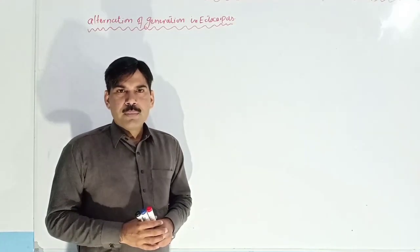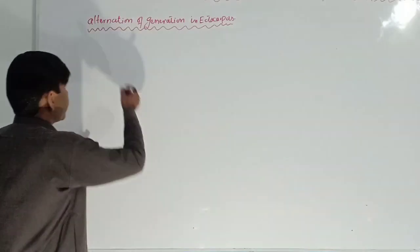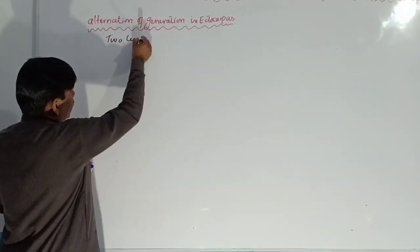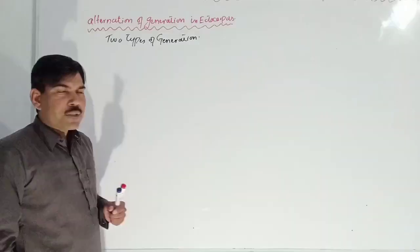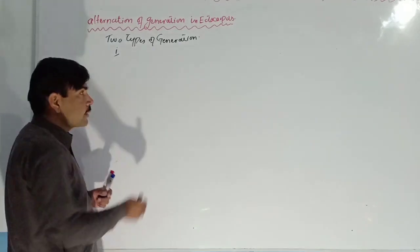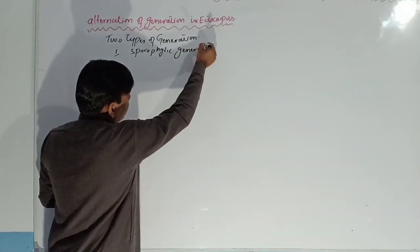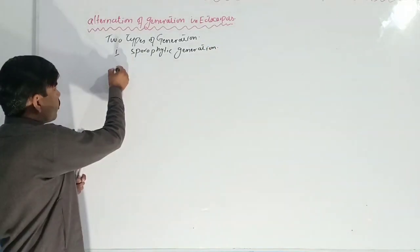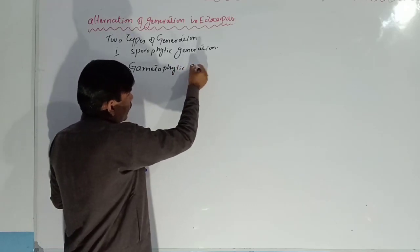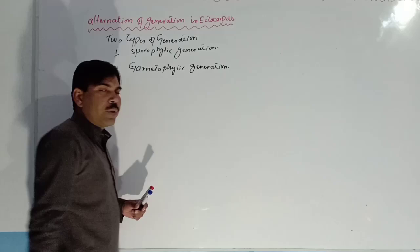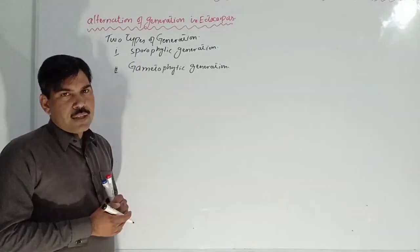Today we are going to study about the alternation of generation in Ectocarpus. There are two types of generations present in Ectocarpus. The first type is known as the sporophytic generation, and the second type is the gametophytic generation. These two generations alternate with each other, which is why this is known as alternation of generation.